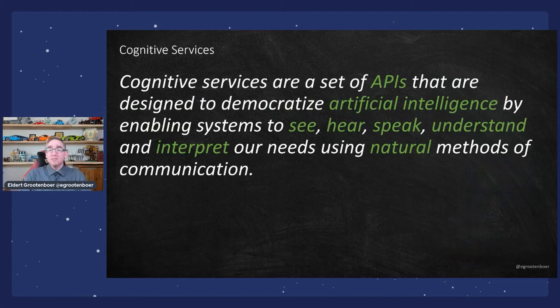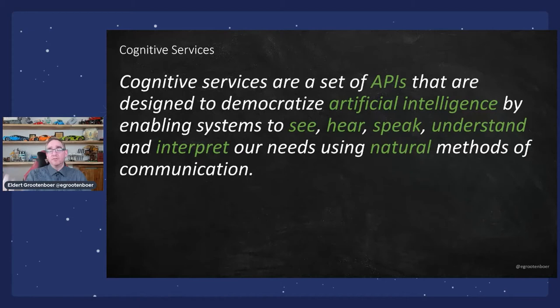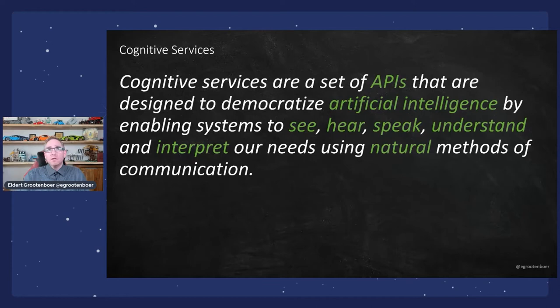Cognitive Services are basically APIs that democratize artificial intelligence by allowing systems to see, hear, speak, understand, and interpret using those same natural methods of communication. Systems use vision, audio, and text to understand what's in there and take action from that. They're exposed as APIs — we can send in, for example, a piece of text, and it will come back saying, okay, this is what I got from this.